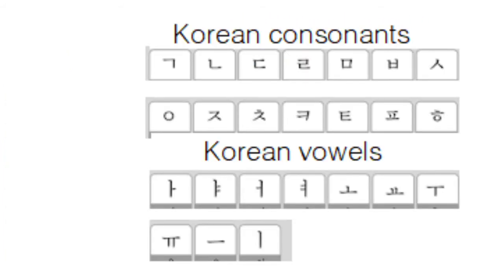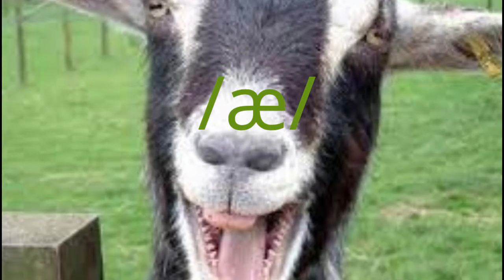Different languages have different sets of phonemes. For instance, in Korean, ra and la are not two separate phonemes, and æ is not a phoneme at all. To Koreans, æ is a sound a goat makes.